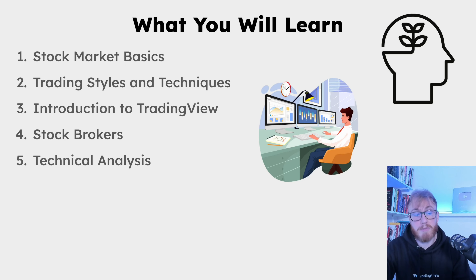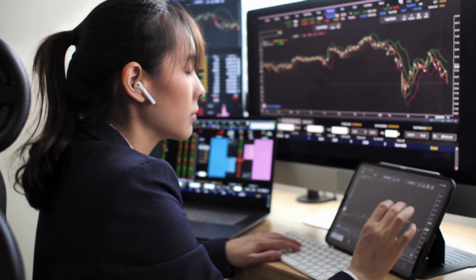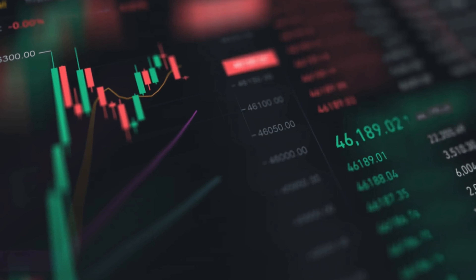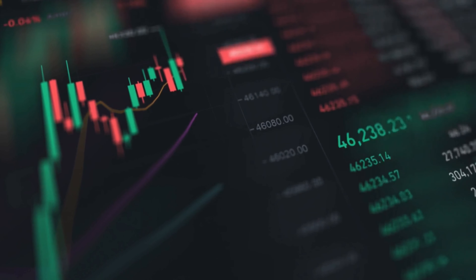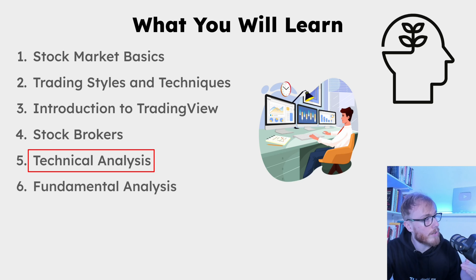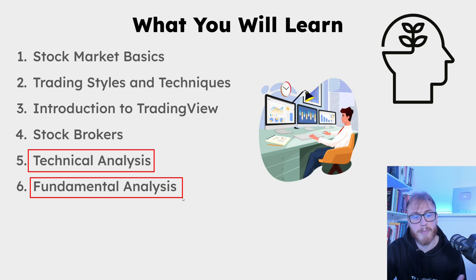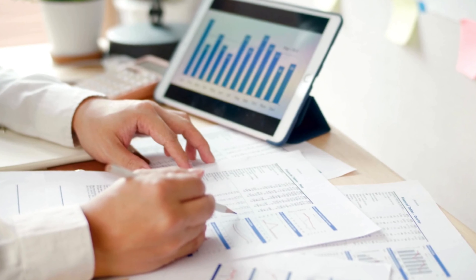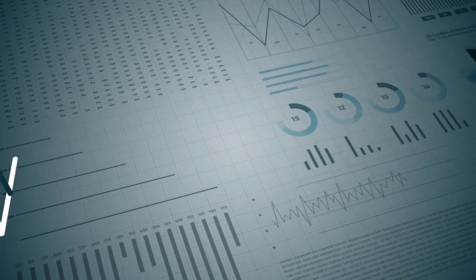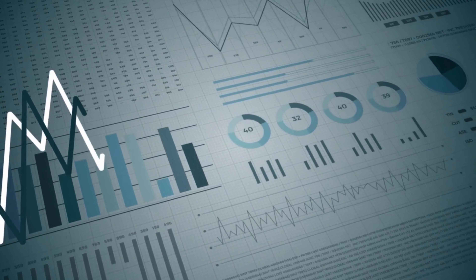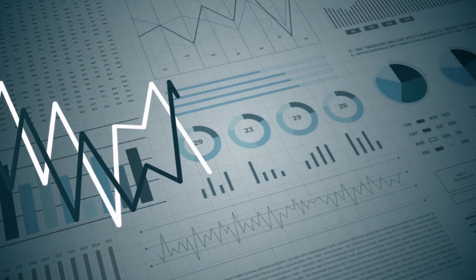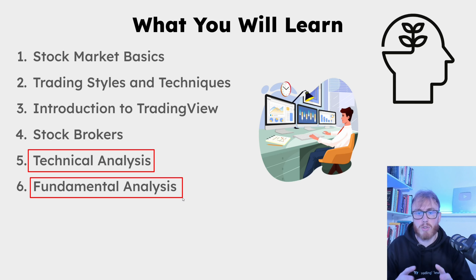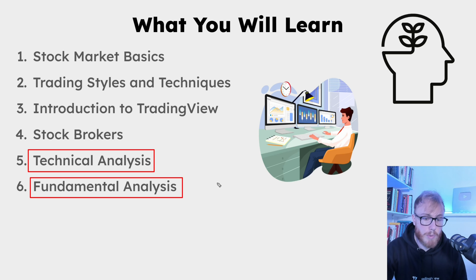Next up in chapter five, we're going to take a look at technical analysis, which is basically when you analyze charts and make trading decisions based on how the price moves. We will also take a quick look at fundamental analysis. Fundamental analysis is more about analyzing the actual stock — how the companies are actually performing. You look at things like balance sheets, income statements, and some traders also do broader macro analysis. In this course, we will quickly cover both fundamental and technical analysis.